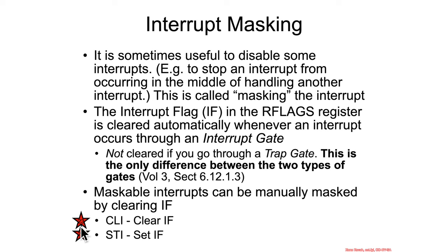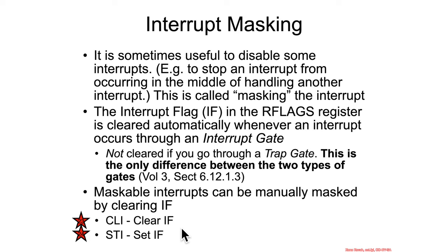Even if it wasn't automatically cleared, you could still in your interrupt handler manually clear it by using the clear interrupt flag instruction, but that would be somewhat pointless. Why use a trap gate just to go on to manually clear it when you could just use an interrupt gate? But the options do exist, particularly for situations in which perhaps some kernel code wants to make really, really sure that it doesn't get interrupted by some hardware interrupts — they can go ahead and clear the interrupt flag and un-clear it once they're ready to accept interrupts again.